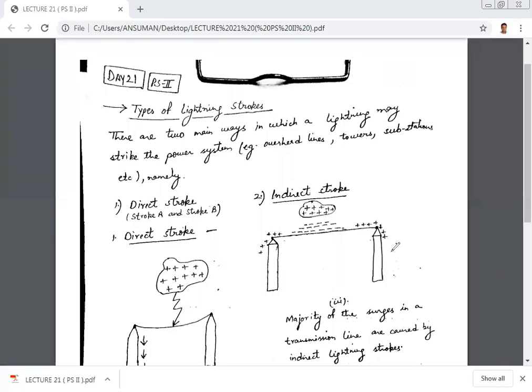Very good morning to all of you. This is the 21st lecture for the subject Power System 2. In the previous lecture, day 20, we discussed what you really mean by lightning and the mechanism of lightning discharge. Continuing from the previous lecture, in today's topic we are going to discuss the types of lightning strokes.